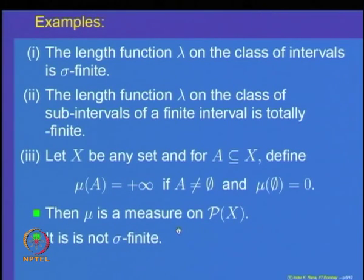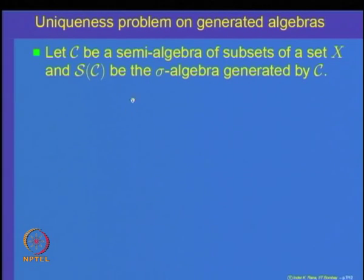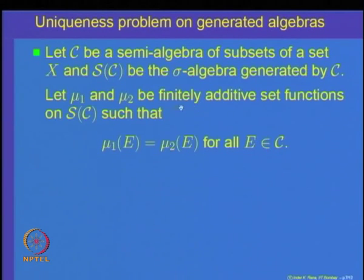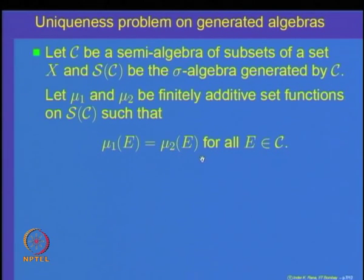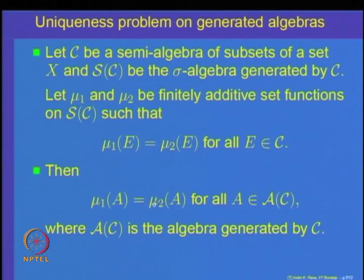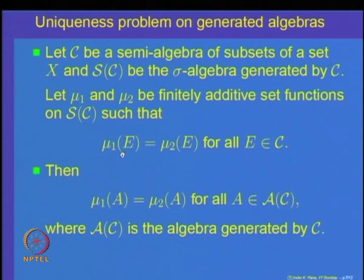The theorem we want to prove today is the following: Let C be a semi-algebra of subsets of a set X and S(C) be the sigma algebra generated by C. Let mu1 and mu2 be two finitely additive set functions on S(C) such that mu1(E) = mu2(E) for all E belonging to C. Then we want to show mu1(A) = mu2(A) for all A belonging to A(C), the algebra generated by C. As a first step, we are going to prove that if two measures mu1 and mu2 defined on a semi-algebra agree, then they also agree on the algebra generated by that semi-algebra.